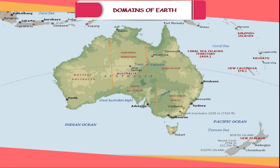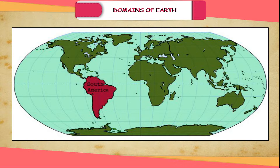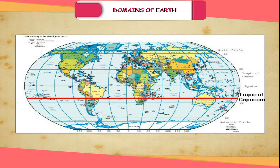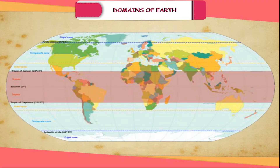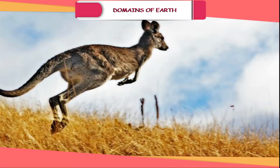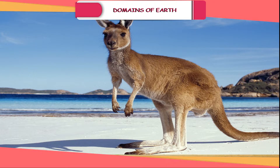Australia. The name Australia comes from the Latin word Australis meaning southern. This continent lies entirely in the southern hemisphere. The Tropic of Capricorn passes through the middle of this continent. It is also called the island continent because it is surrounded on all sides by the oceans. This is the smallest continent and a country as well. Kangaroo is the unique animal of this continent.